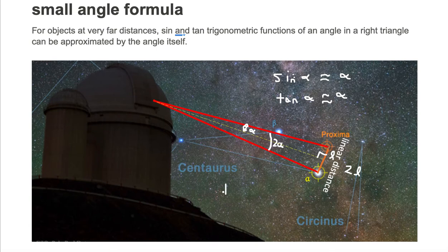If we take a look at the tangent of the angle, by definition, the tangent is going to be opposite over adjacent, which is going to be L over D. We're going to approximate the distance between the two stars and the observatory by D.